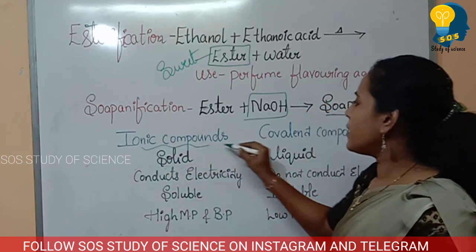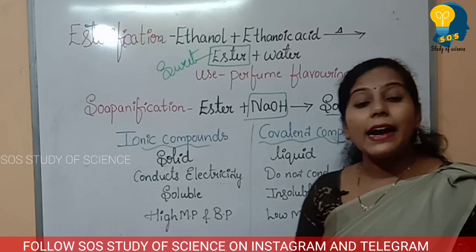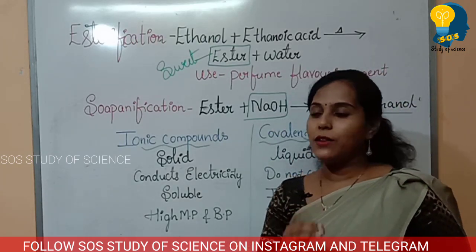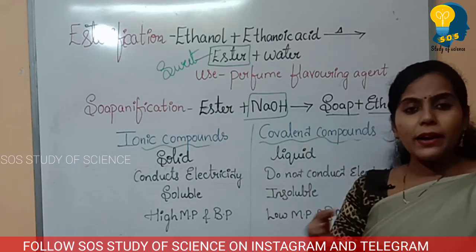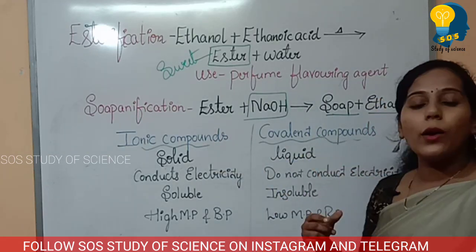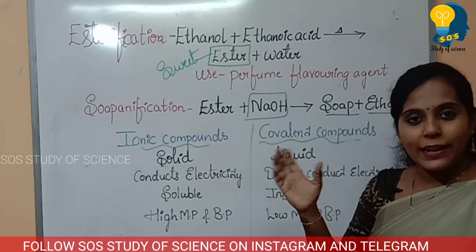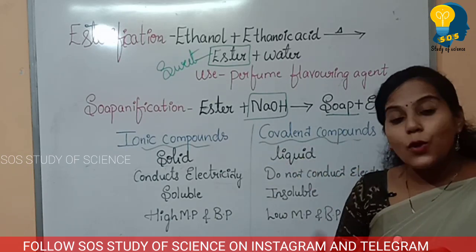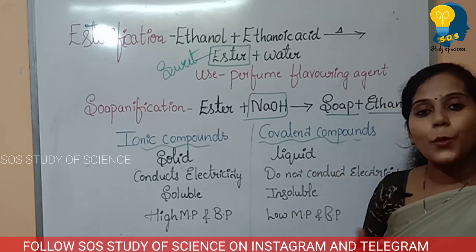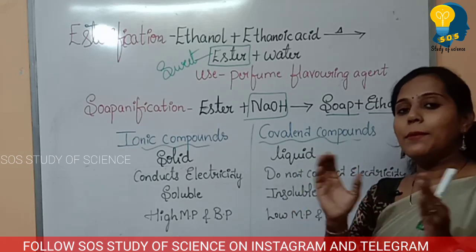You have to explain the difference between metals and non-metals in physical properties as well as chemical properties. Also explain the difference between ionic compounds and covalent compounds. Write the properties of ionic compounds and covalent compounds. This is easy.